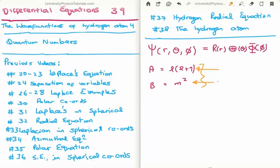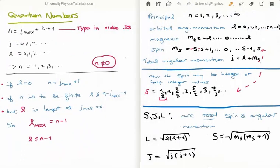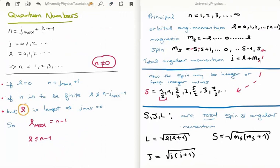Now in video 38 I also introduced the principal quantum number capital N. So on the top left of your screen we found that N is equal to J max plus L plus 1. Now by the way I noticed two typos on this page in video number 38 and I'm quite embarrassed about them. First of all it's L plus 1, it's not L minus 1 as I had in video 38. And you also see that I had a typo down here as well, but I'll discuss that in a moment.